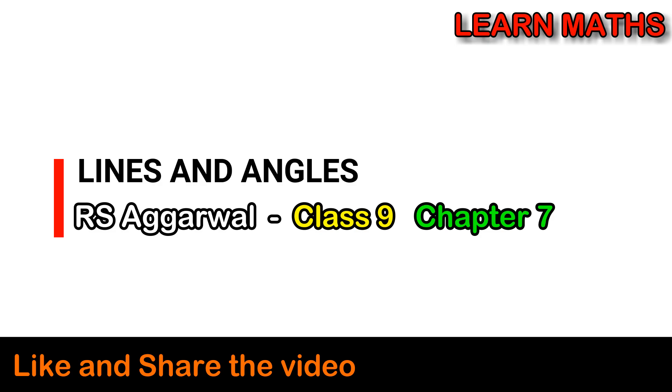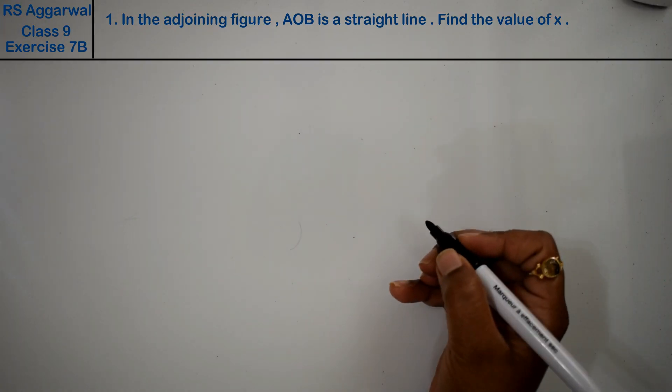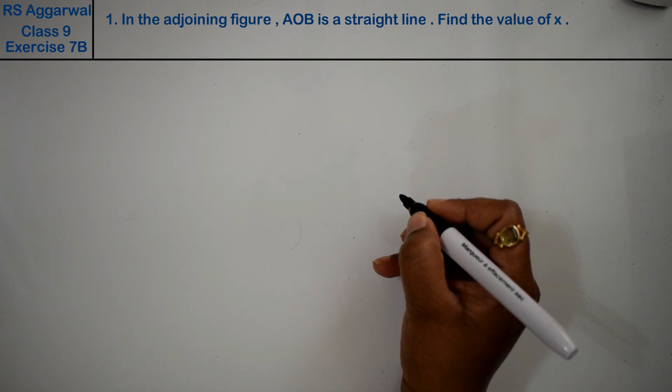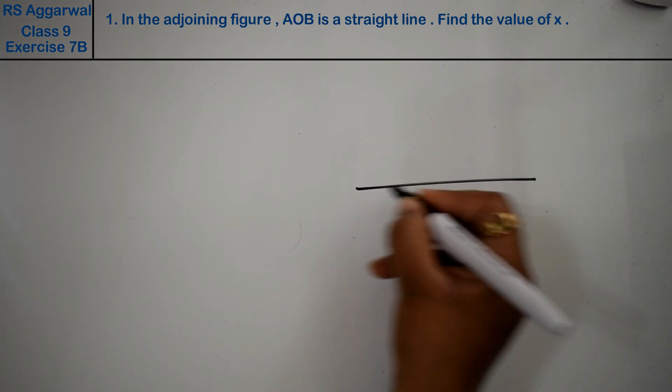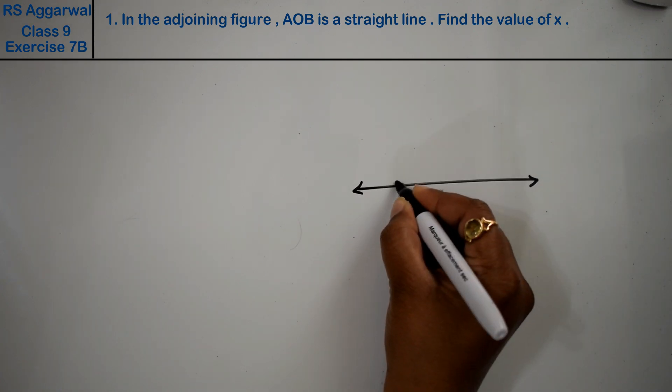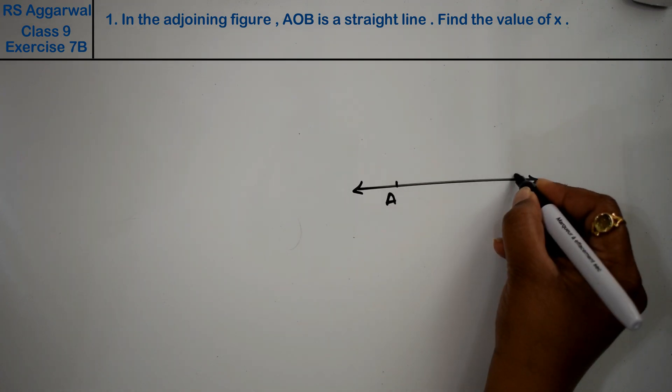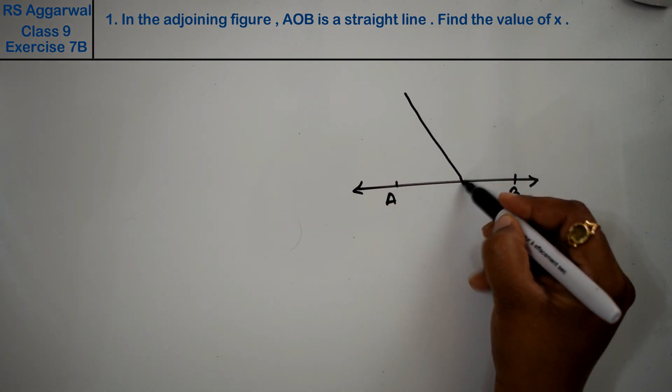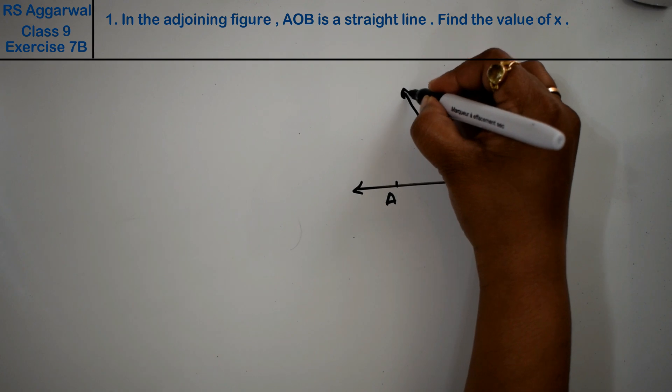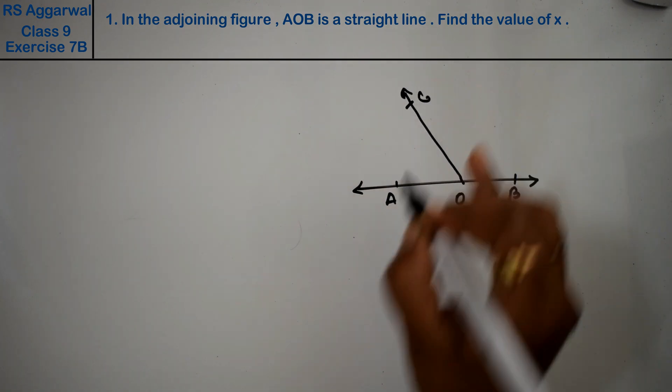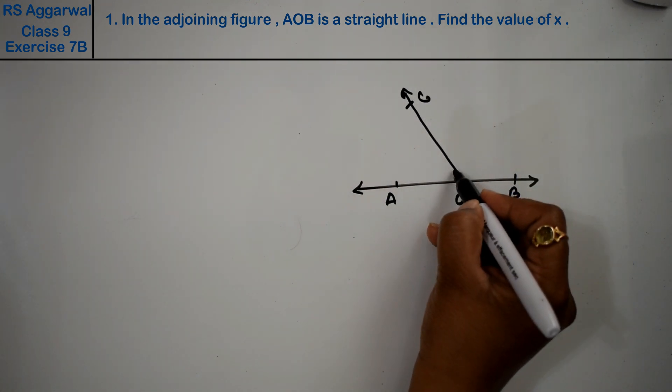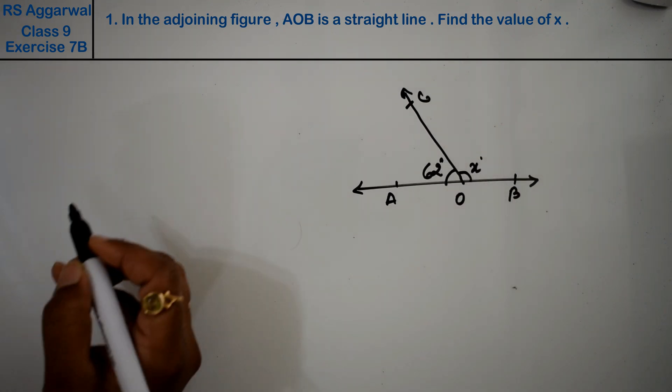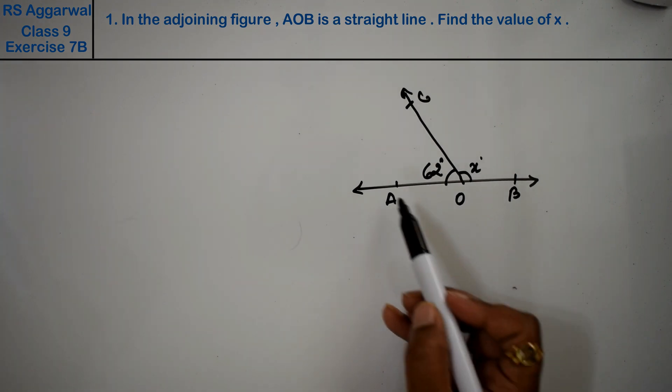Let's do question number 1 of exercise 7B, which is about lines and angles. Question number 1 is: In the adjoining figure, friends, we have a figure where there is point A, B, and this is point O, and C. This angle is 62 degrees and this is x degrees. AOB is a straight line.